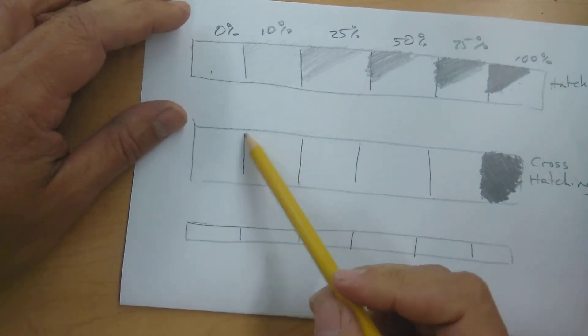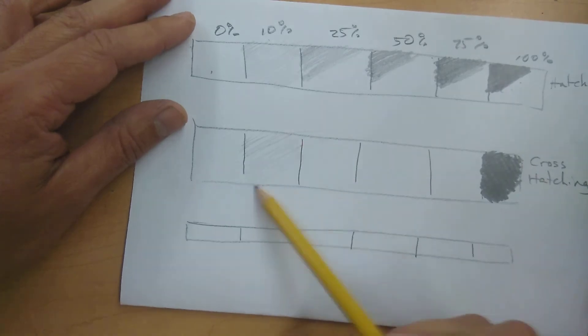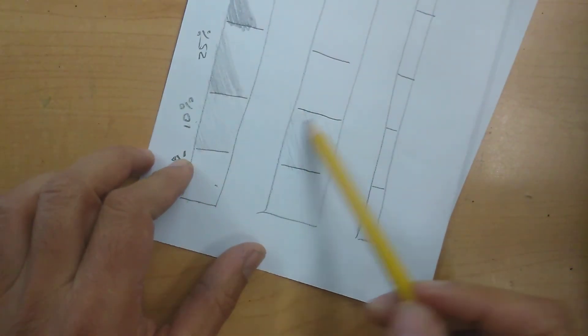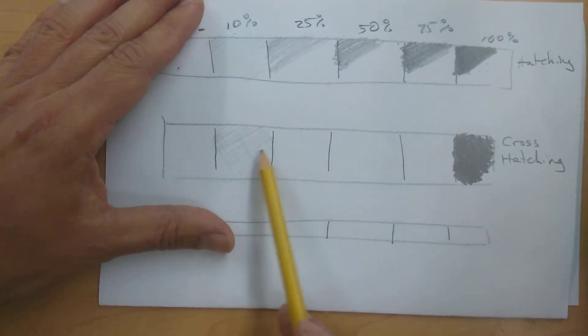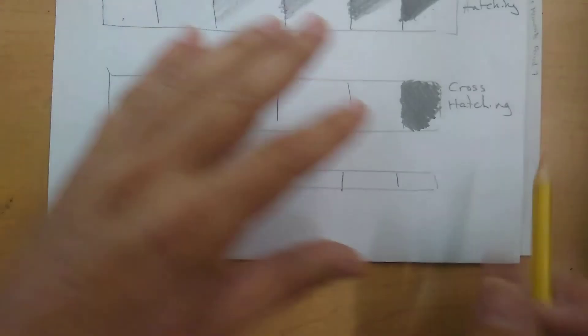And as light as I can go, just floating my pencil over here. Opposite direction. And you would fill in the rest of these boxes gradually getting darker. Last one. We're going to use stippling.